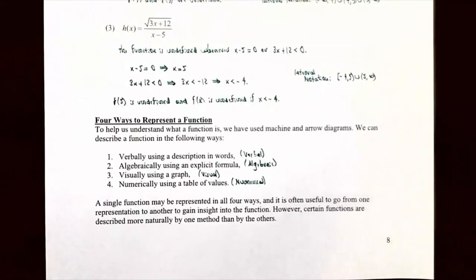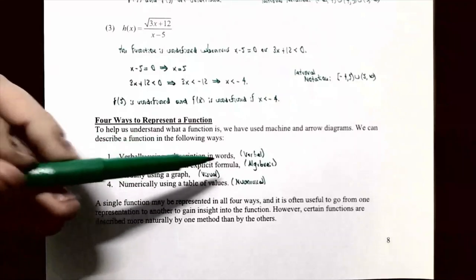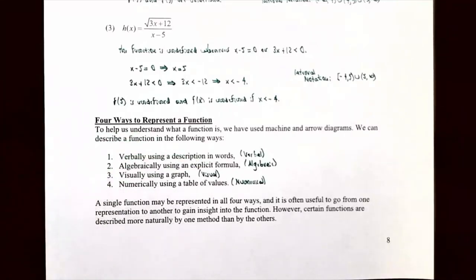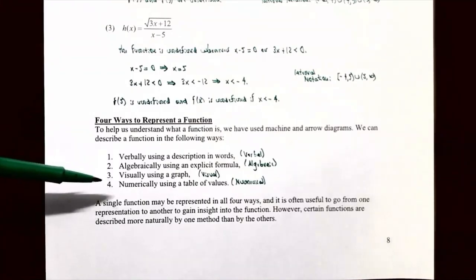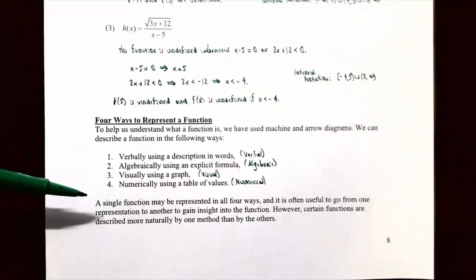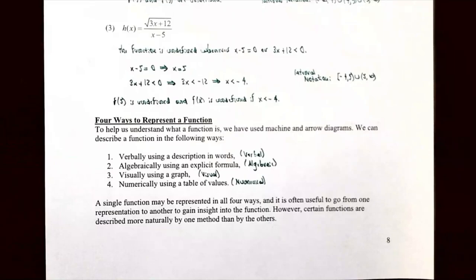There are four ways to represent a function: algebraically using a formula, verbally using words, visually using a graph, and numerically using a table of values. We've already seen a few of these. These four representations — verbal, algebraic, visual, and numerical — are the main ways you'll work with functions.